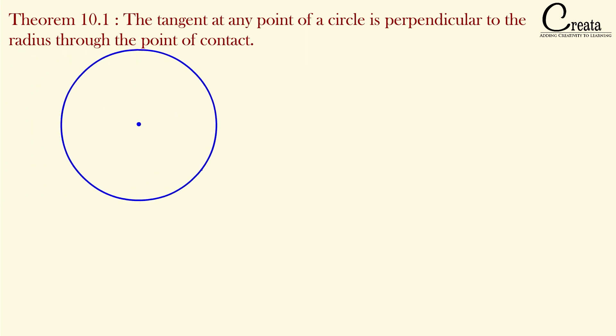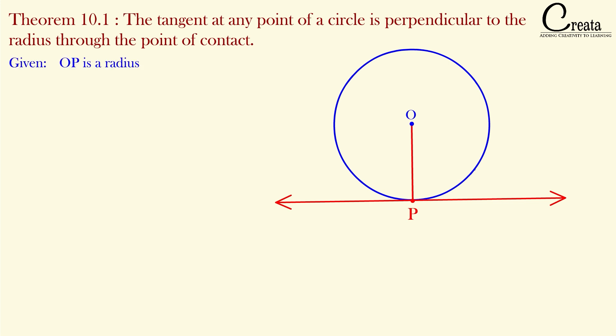Here we have a circle and a tangent. The point of contact is P and O is the center point. OP is the radius and XY is the tangent. We have to prove the radius and tangent are perpendicular to each other, that is, OP ⊥ XY.